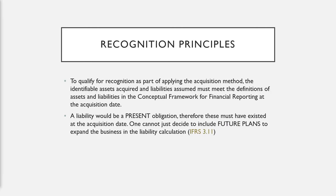To qualify for recognition as part of the acquisition method, the identifiable assets must meet the definitions of assets and liabilities. The liability would be a present obligation and therefore must have existed at acquisition date. You cannot include future plans for the business — like future plans to expand — in the liability inclusion. That's what IFRS 3.11 stipulates.